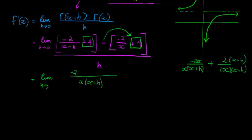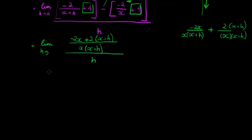So I have negative 2x plus 2(x+h), everything divided with an h. So let's simplify that a little bit further.